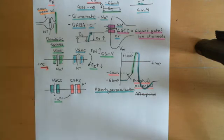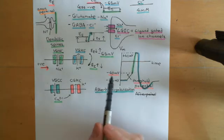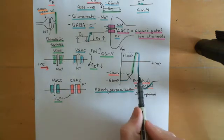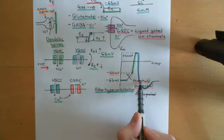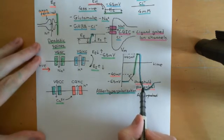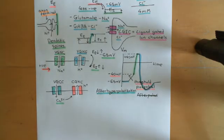Those calcium-gated potassium channels are partly responsible for the after-hyperpolarization. The other part is played by the voltage-gated potassium channels remaining open — maybe this first little portion — but then the more severe part down below is played by the calcium-gated potassium channels. We will be studying these calcium-gated potassium channels later on.